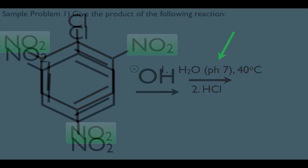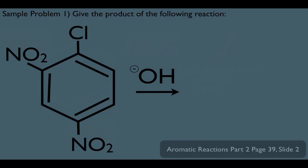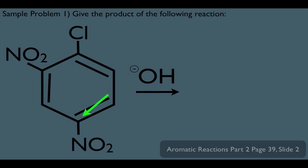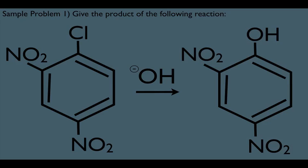Let's look at some sample problems. If you're on an orgo exam and asked to predict the product: first, you're adding a nucleophile, so this must be nucleophilic aromatic substitution. The carbon bearing Cl provides a leaving group, and there are strong electron withdrawing groups ortho and para to that carbon. So you simply replace the Cl with the added nucleophile to get the product quickly — that's your thought process for the quick product on your orgo exam.